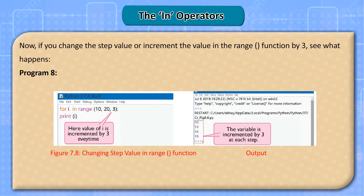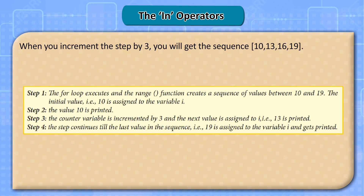Program 8: if you change the step value and increment by 3 in the range function, when you increment the step by 3 you will get the sequence 10, 13, 16, 19. Step 1: the for loop executes and the range function creates a sequence between 10 and 19; the initial value 10 is assigned to the variable. Step 2: the value 10 is printed. Step 3: the counter variable is incremented by 3 and the next value 13 is printed. Step 4: the step continues till the last value 19 is assigned to variable i and gets printed.